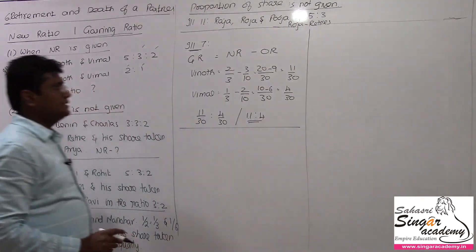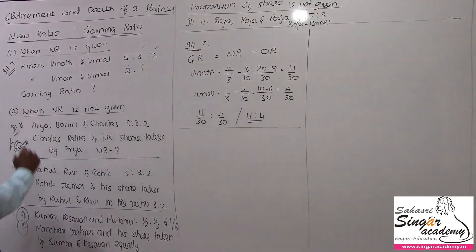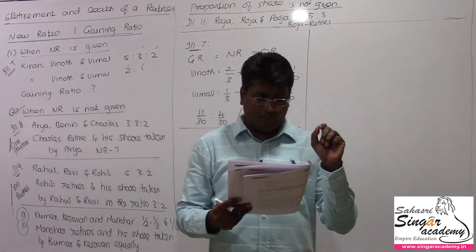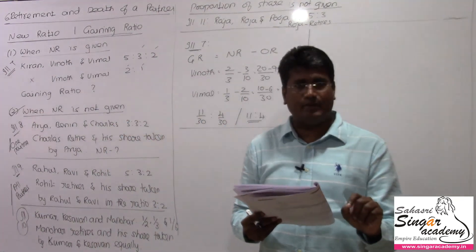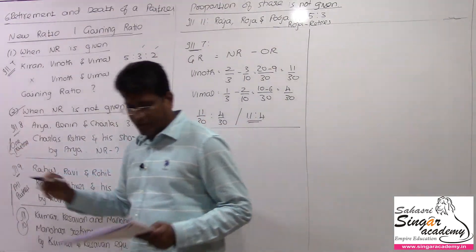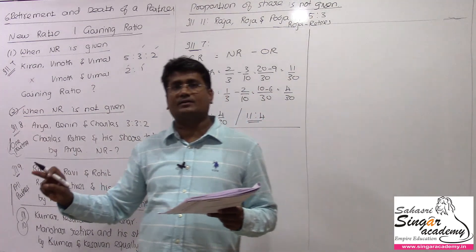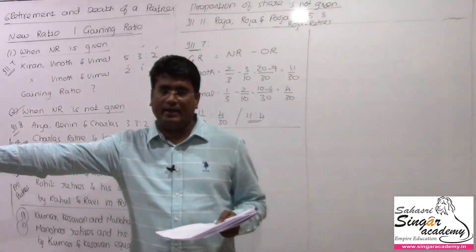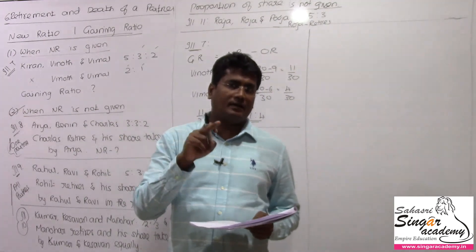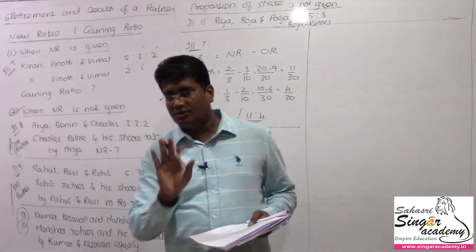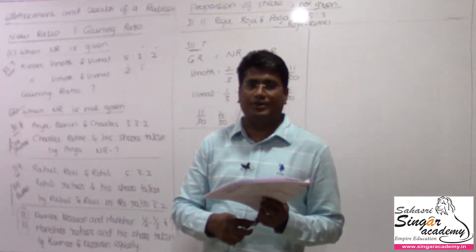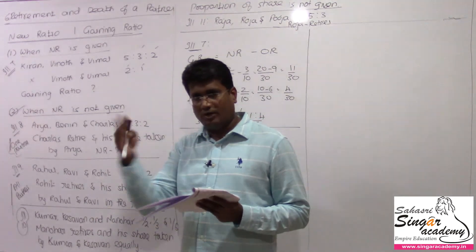I hope you could understand Illustration 7. Now I am going to discuss Illustration 8, where the new profit sharing ratio is not given. First case: only one partner gains the retiring partner's share. We have to find out the new ratio. Illustration 8 — gaining ratio is 1 is to 0.